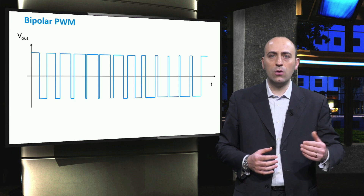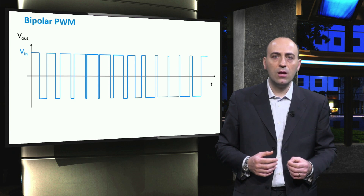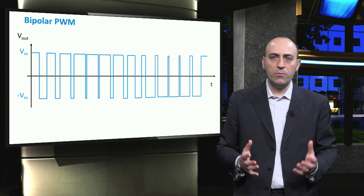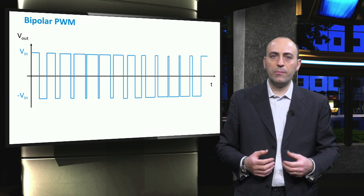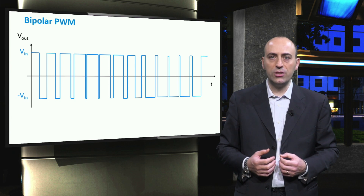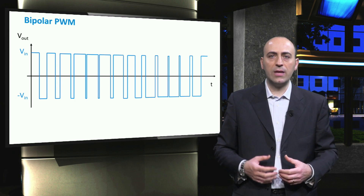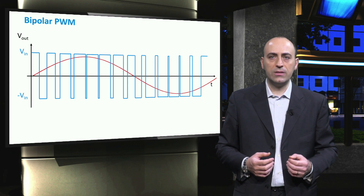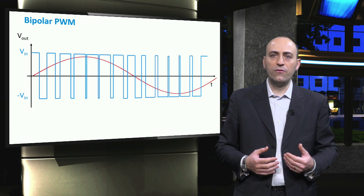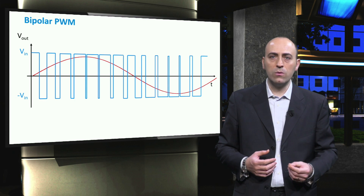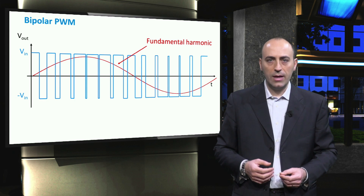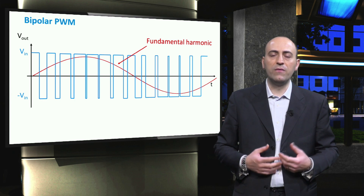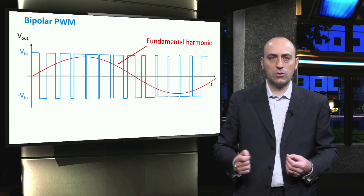The resulting output signal of the switch bridge is a bipolar periodic wave that goes from a positive value of the input voltage, Vin, to the negative value, minus Vin. As we saw in the previous video, such a time-dependent periodic output signal of the bridge can always be decomposed as a sum of sine and cosine waves. Using Fourier analysis, it can be shown that the frequency of the first harmonic equals that of the control signal. All the harmonics of higher order are disturbances that need to be filtered out before going to the inverter output.